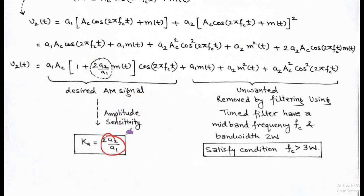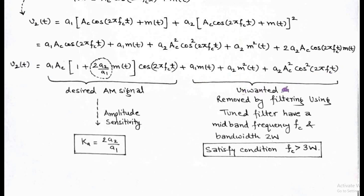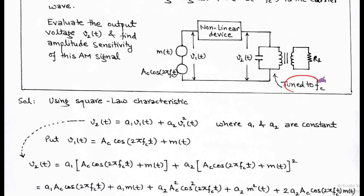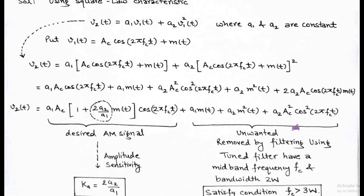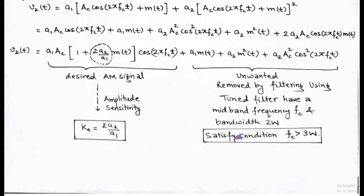The first term corresponds to the desired AM signal, having amplitude sensitivity ka = 2a2/a1. The remaining terms are unwanted and can be removed by filtering using a tuned filter with midband frequency fc and bandwidth equal to 2W. This tuned circuit must satisfy the condition that the carrier frequency fc is greater than 3W.